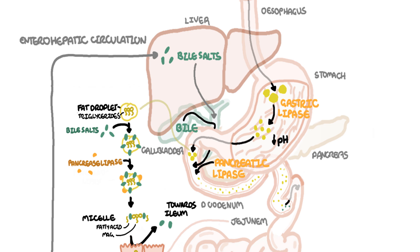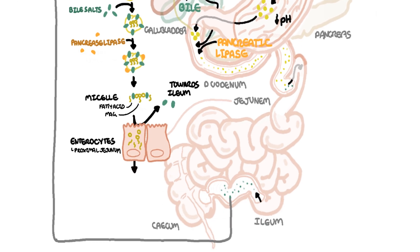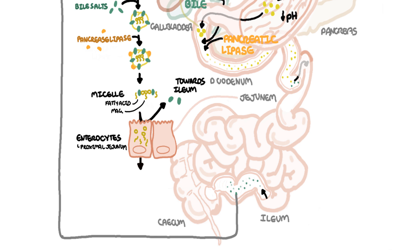The fatty acids and monoglycerides which were absorbed in the jejunum will be packaged up in the cells to form fully mature chylomicrons. These chylomicrons will then bind to the basolateral membrane and are transported to the intestinal lymphatics, from which they enter the general circulation to be transported around the body.